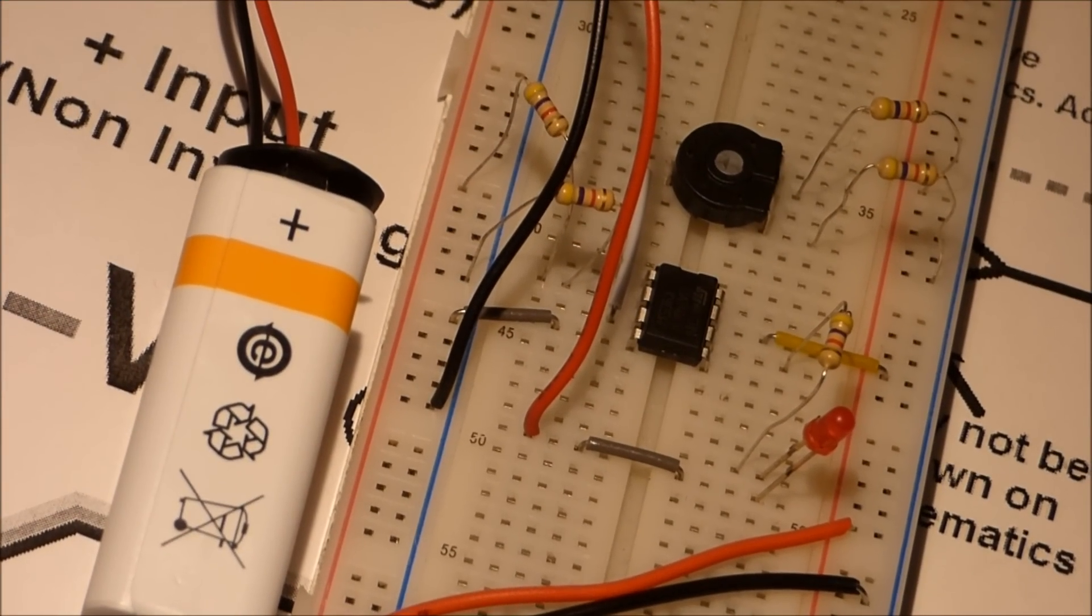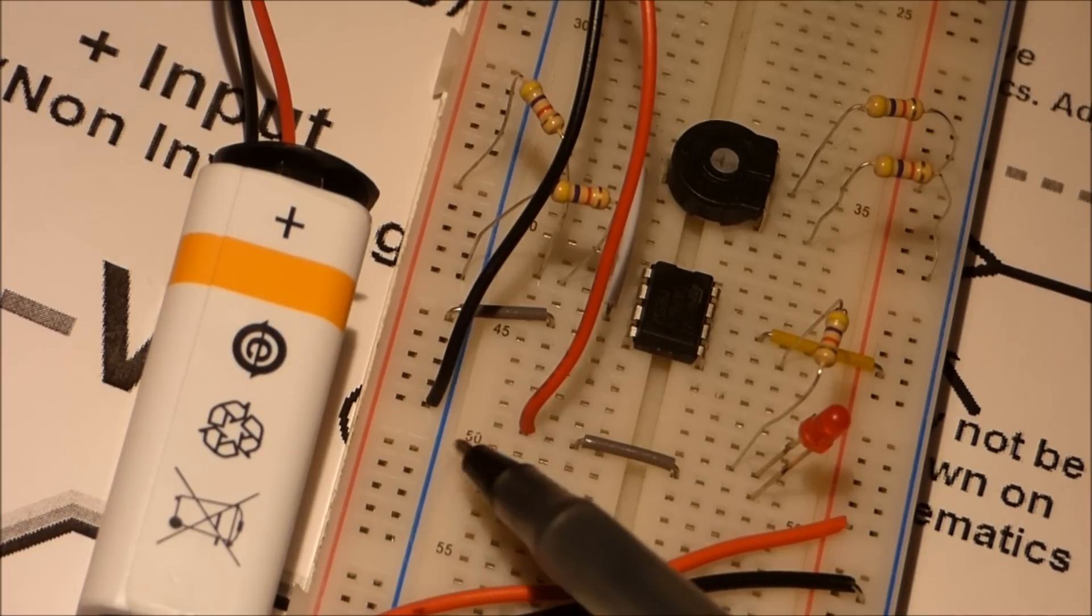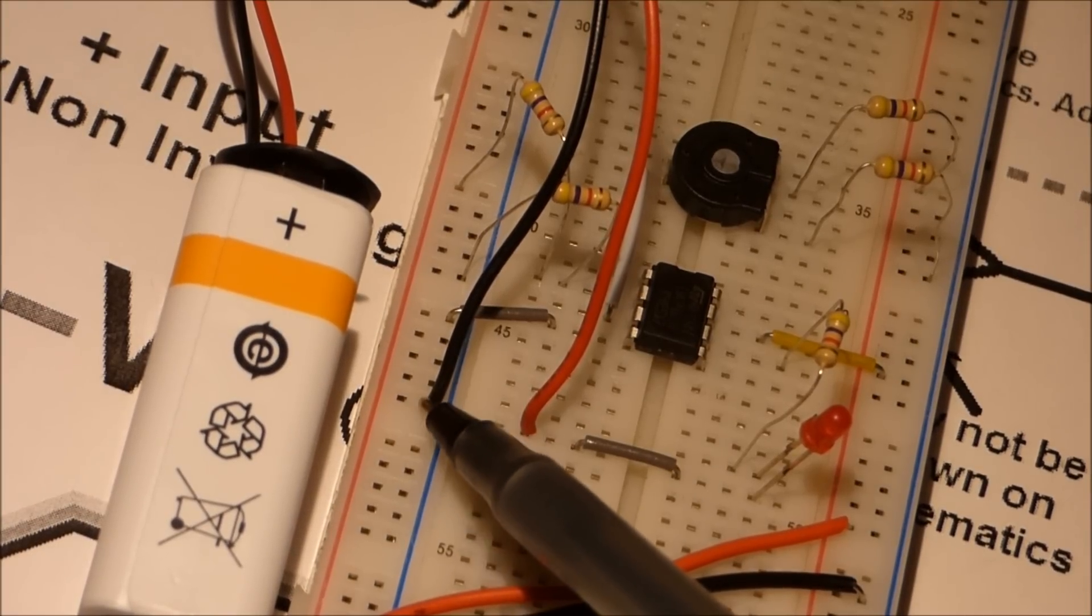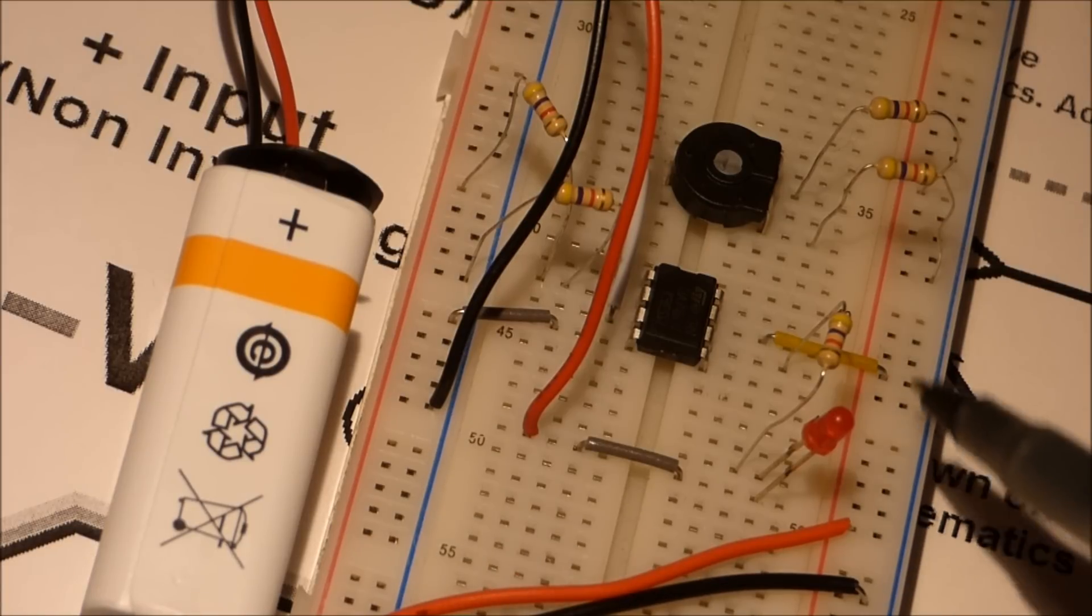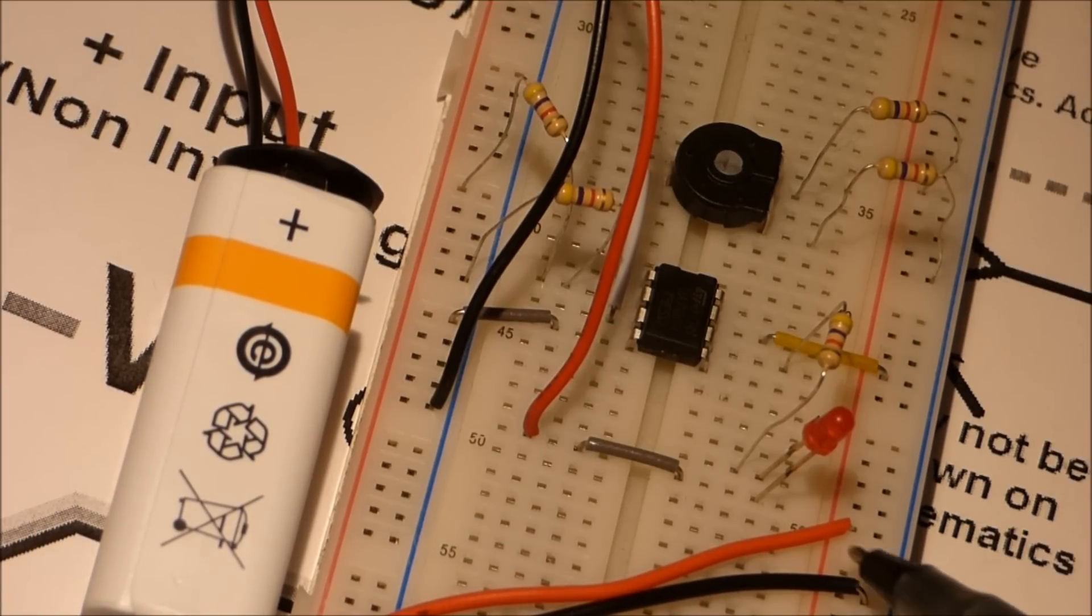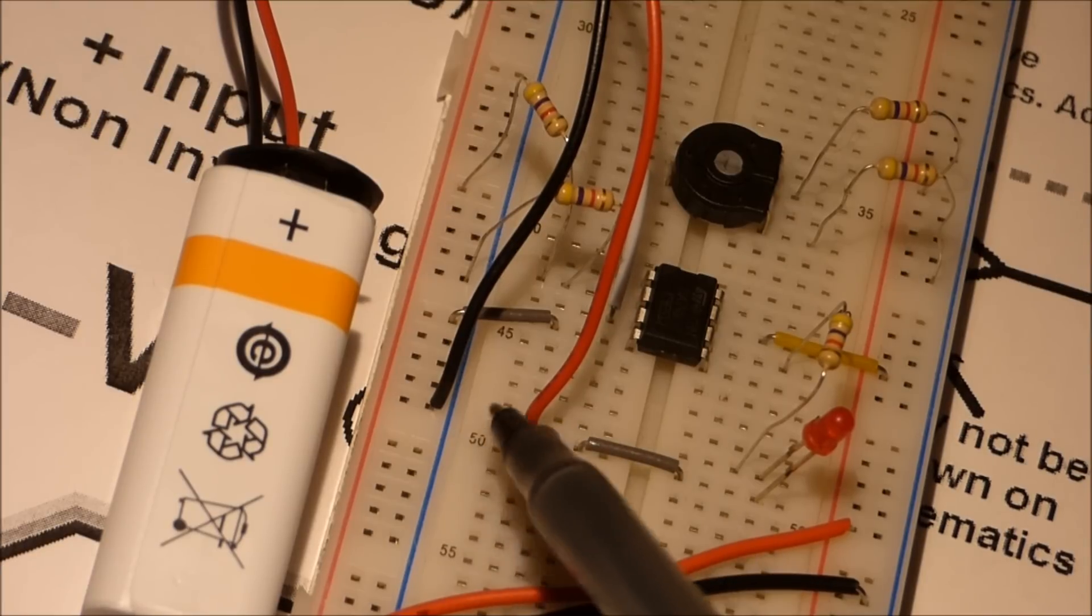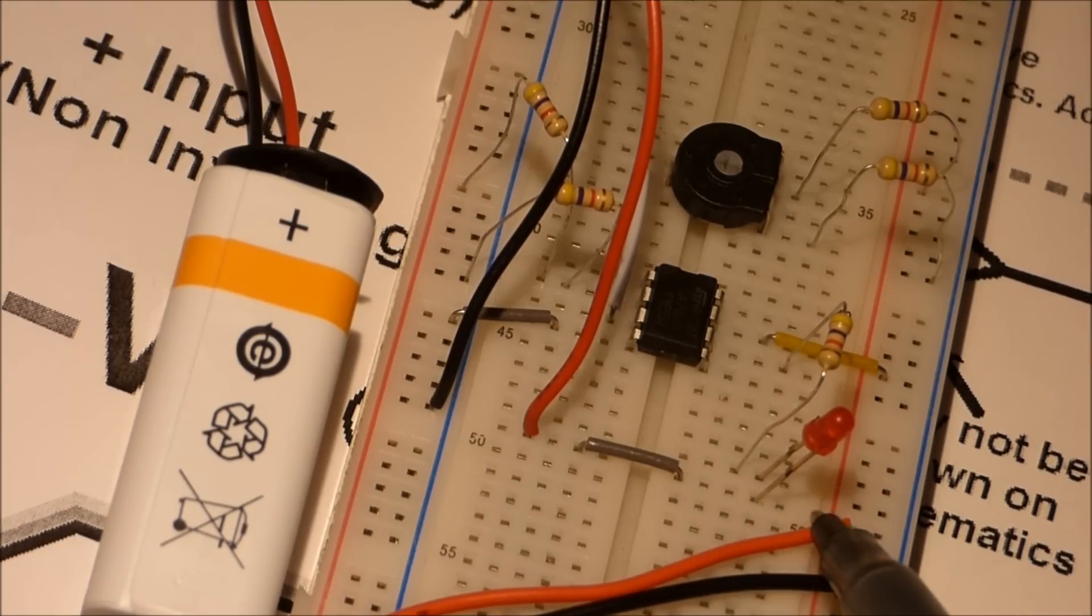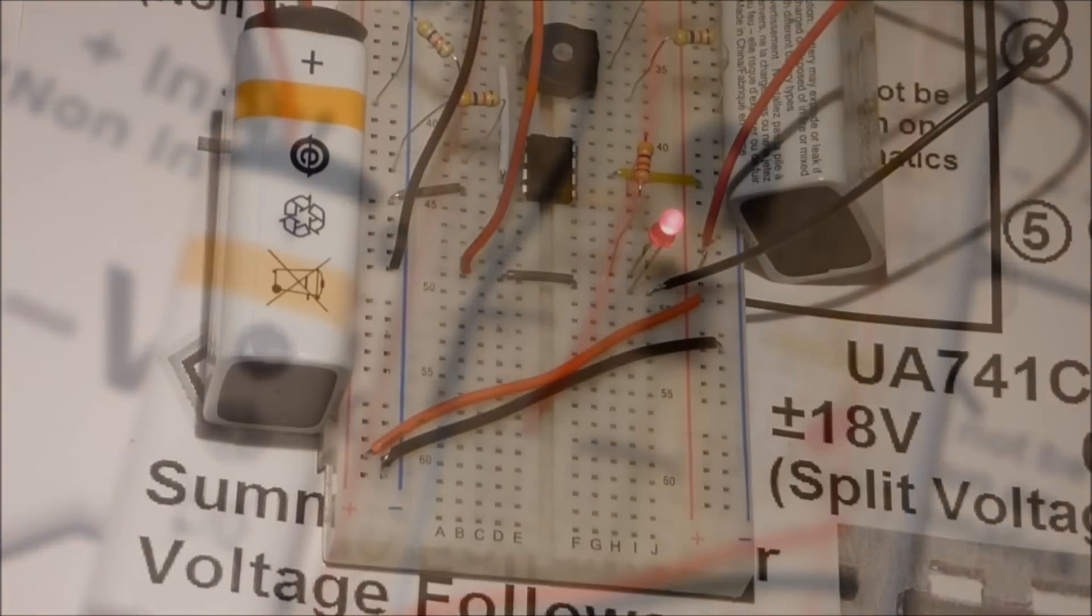So I'm starting off with this 9 volt battery. As I said, we've got to add another 9 volt battery. The negative is plugged into the negative power rail, which is also connected to this negative power rail. And then the positive comes to this row, which I said before is the ground.